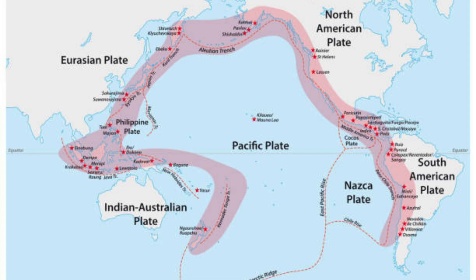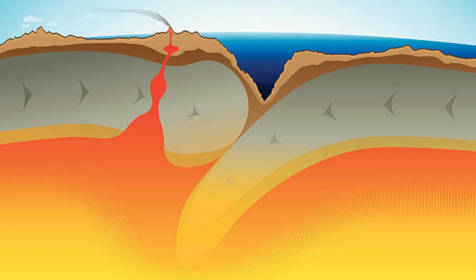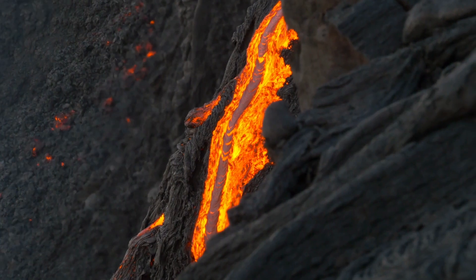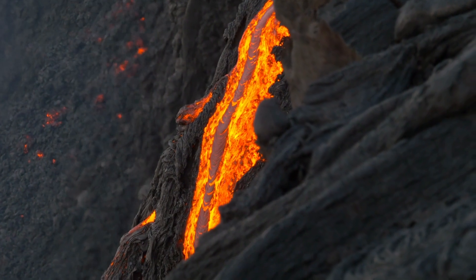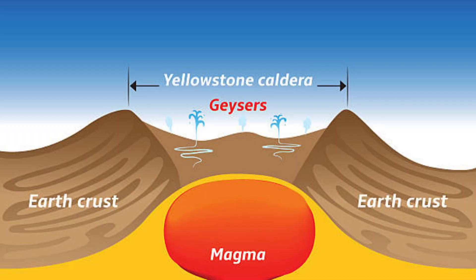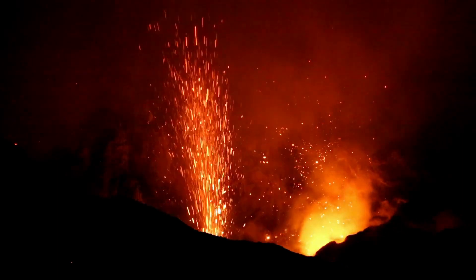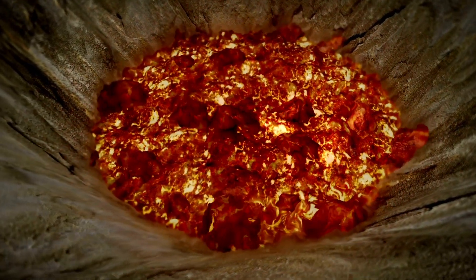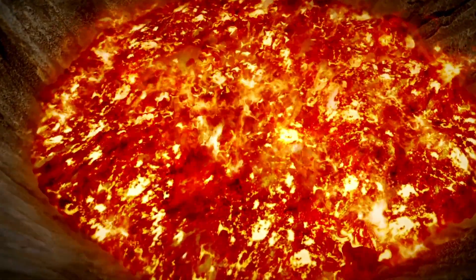But why do these plates move? The reason is almost certainly to be found inside the Earth. The mantle of the Earth is hot and malleable. The energy for this heating is related to radioactive processes within the Earth. The heat generated in this way is gradually transferred to the surface, and a convection motion is established.